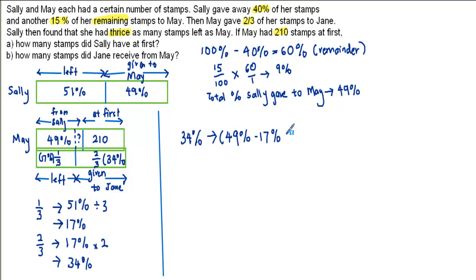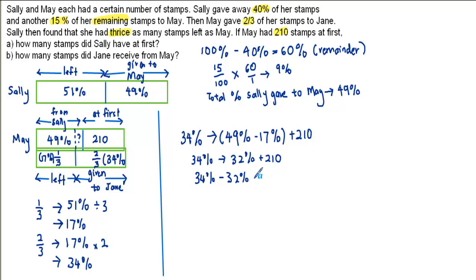34% equals 32% plus 210 stems. So 34% minus 32% equals 210. That means 2% equals 210. So 1% is actually 210 divided by 2, which is 105. Now that we know 1% equals 105 stems.